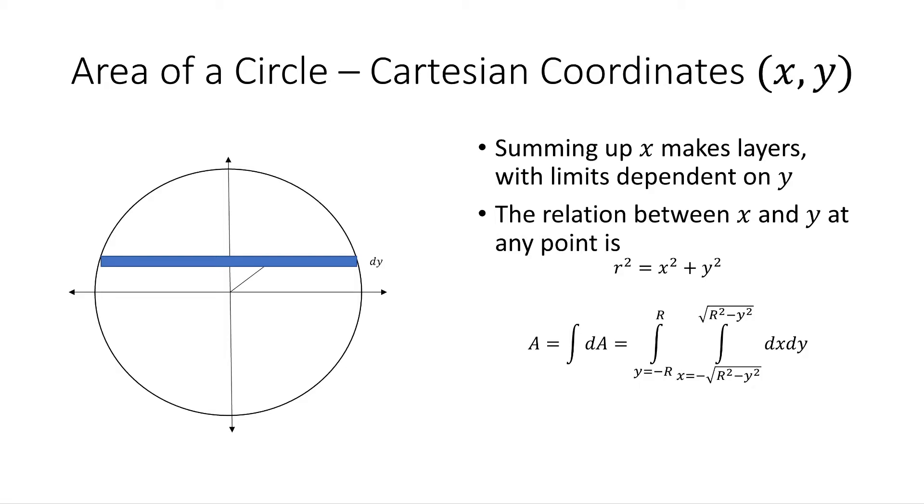So if we can imagine summing up all the points at a particular y value from the left to the right, and it has thickness dy, that's a little tiny layer of area. And then if we can imagine taking that little layer of area and summing it up to positive r for y values and negative r, we would sum up the entire area of a circle.